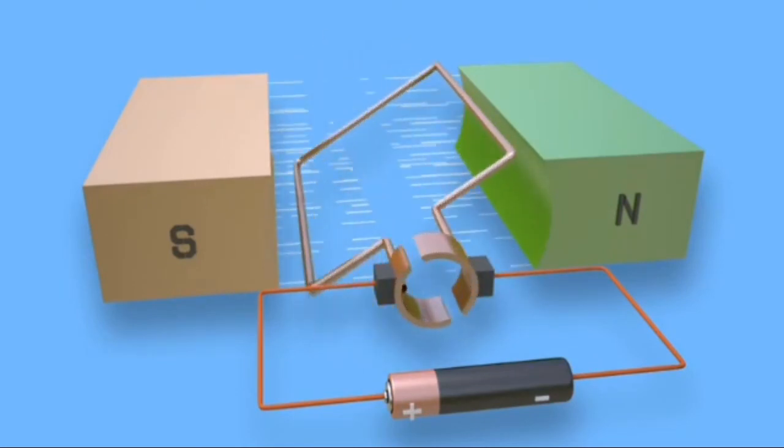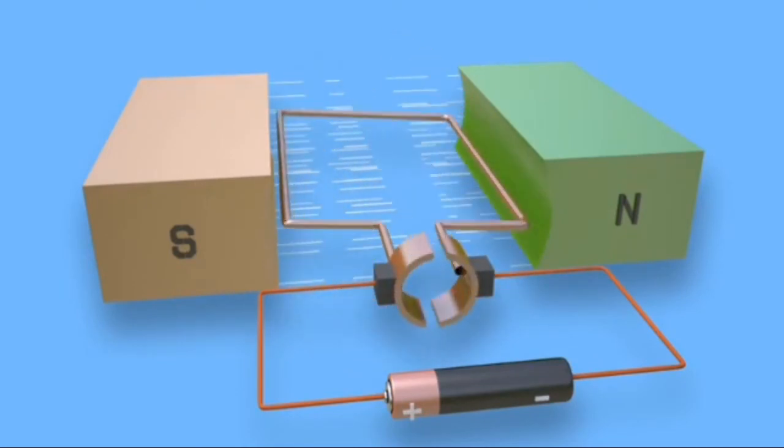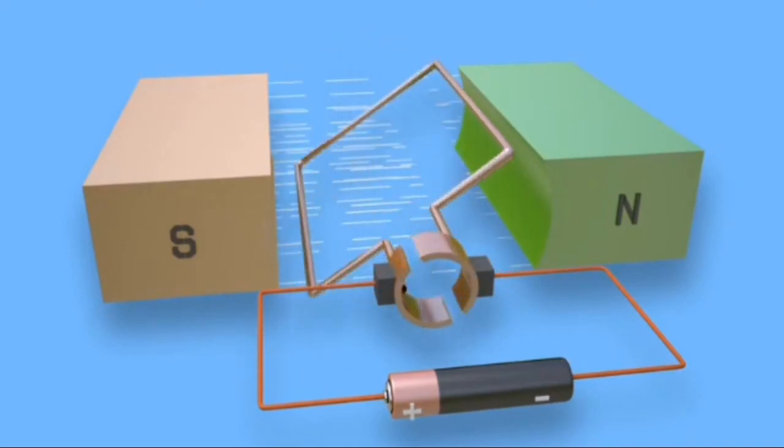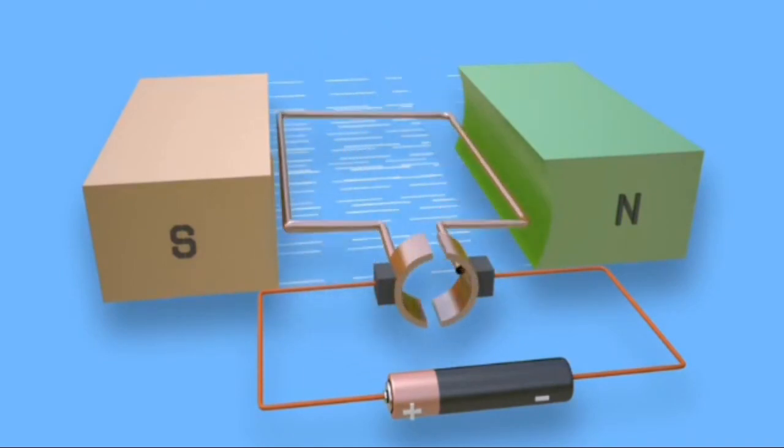Instead of single turn in DC motor we have multiple turns and major coils. And instead of two poles there are number of poles installed.